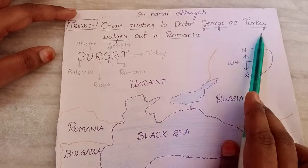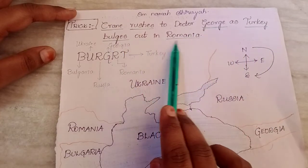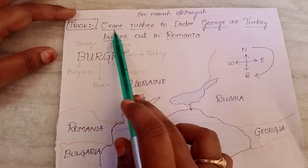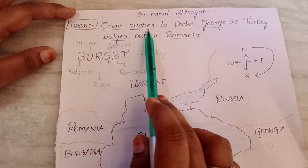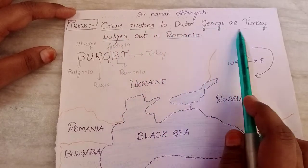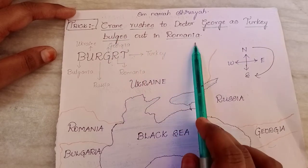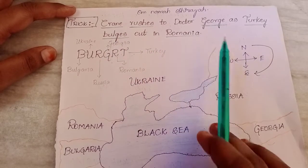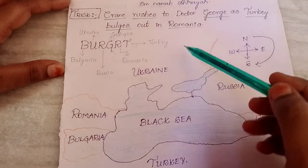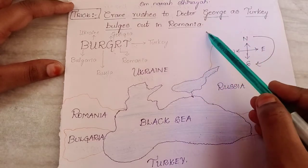Once again: 'crane rushes to Dr. George as turkey bulges out in Romania.' It is very easy if you remember the sentence rather than remembering the whole map.